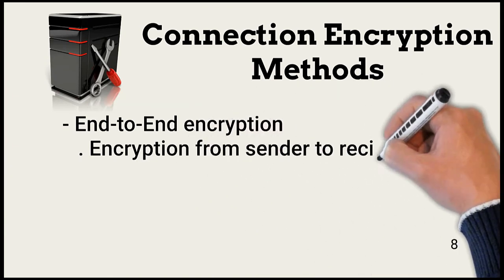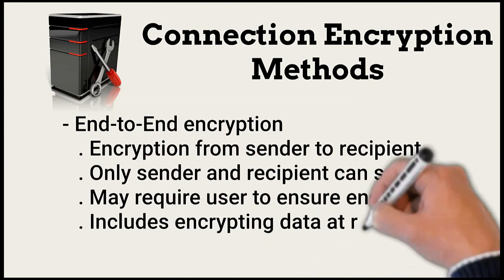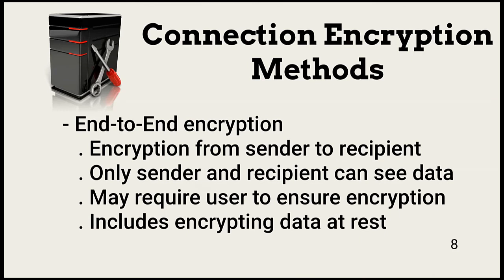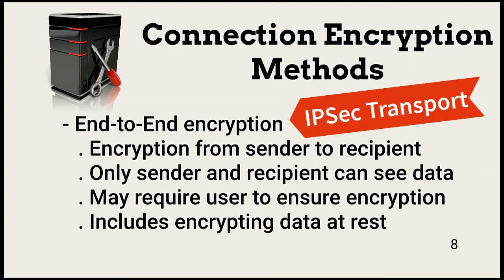End-to-end encryption is enabled by public-private key pairs. One downside is that this approach sometimes relies on user intervention; in others, certificates may be used to enable the encryption. Data is encrypted from the time it leaves the sender to the time the receiver receives it. None of the nodes on the network path between sender and receiver can see the encrypted data.